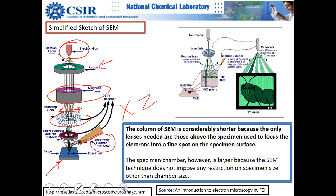Electrons that can take a U-turn without losing any energy — backscattered electrons — are picked up by a donut-shaped concentric detector. It has a fairly large cross-section and is placed differently compared to secondary electron detectors.